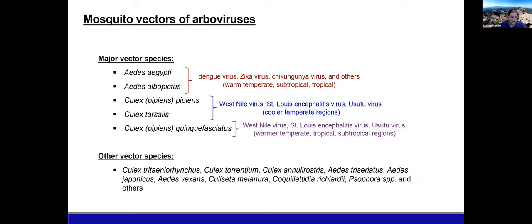There are many other vector species I won't mention today, such as Culex tritaeniorhynchus, which transmits Japanese encephalitis virus, or Aedes triseriatus, which transmits LaCrosse encephalitis virus.